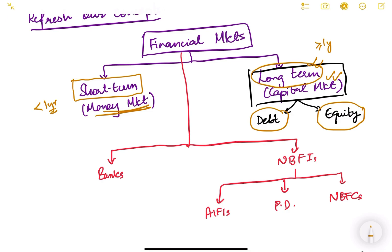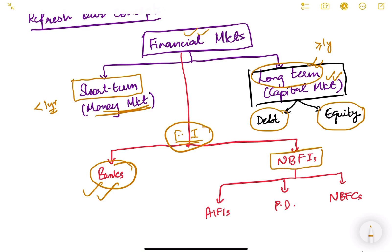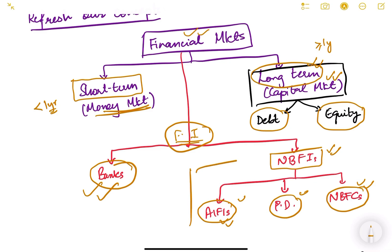We had also seen the institutions working in financial markets, known as financial intermediaries. One type is banks, which we covered in previous lessons. Another type is non-banking financial institutions, which are of three kinds: all-India financial institutions, primary dealers, and NBFCs. We have covered all of this, along with banks and money markets.